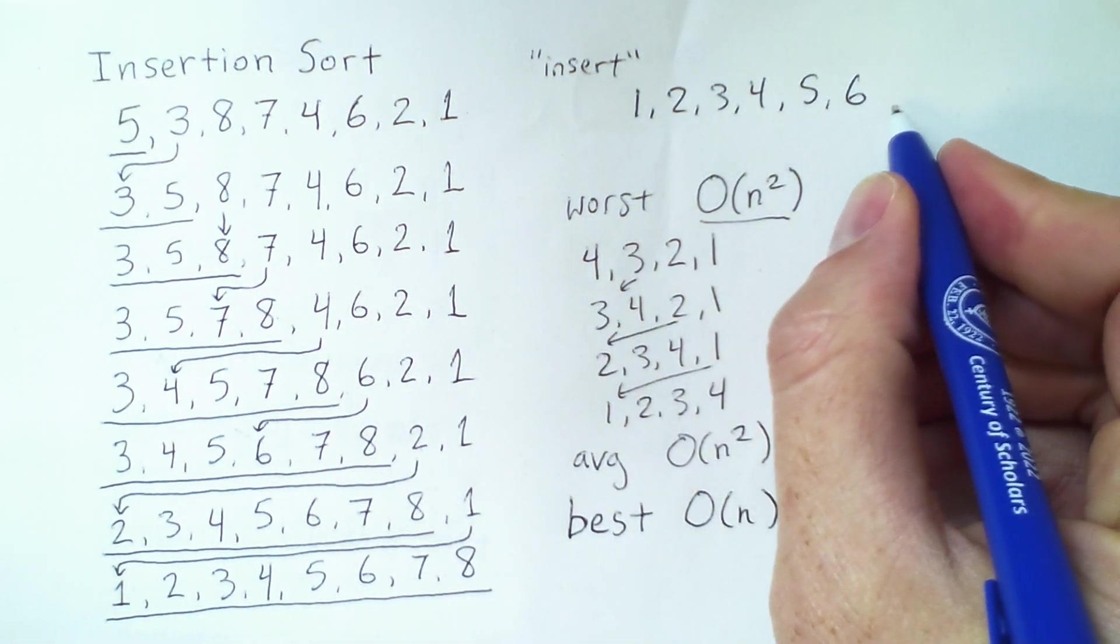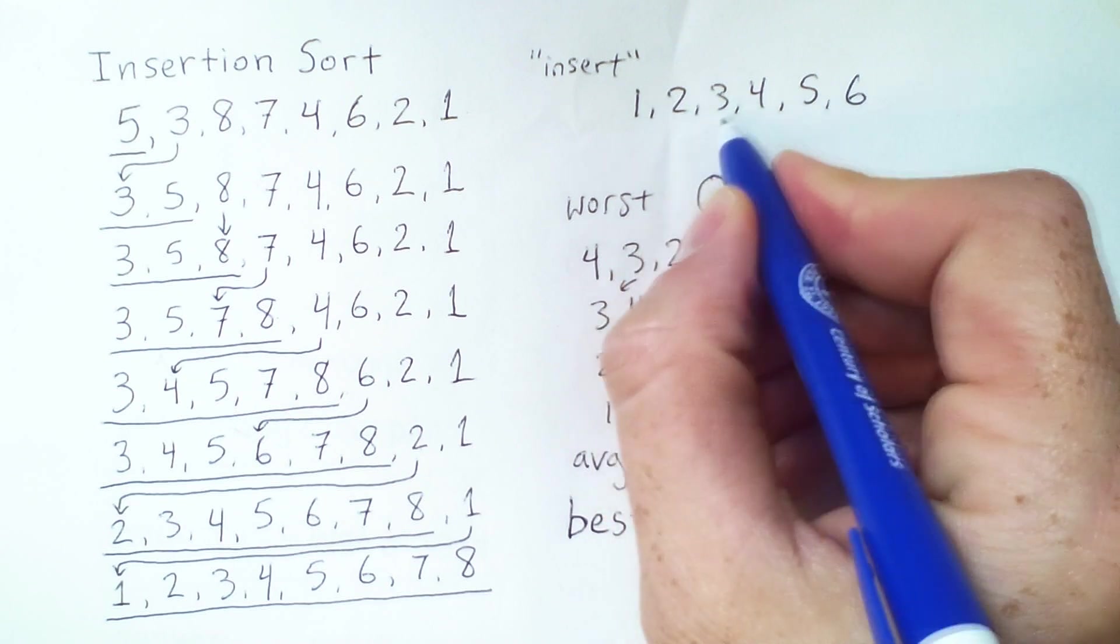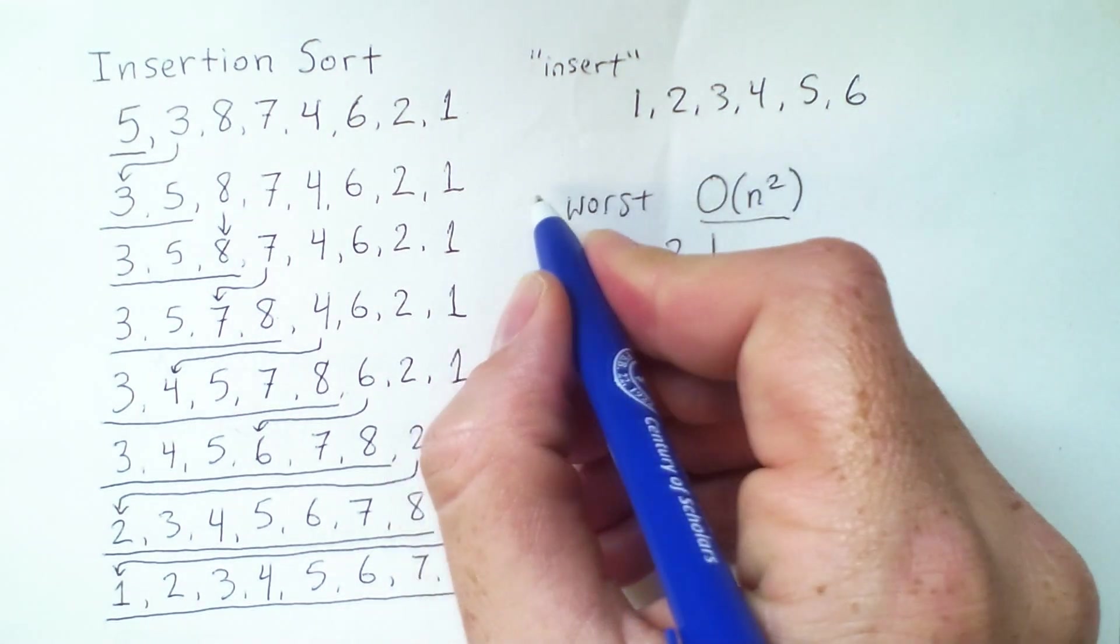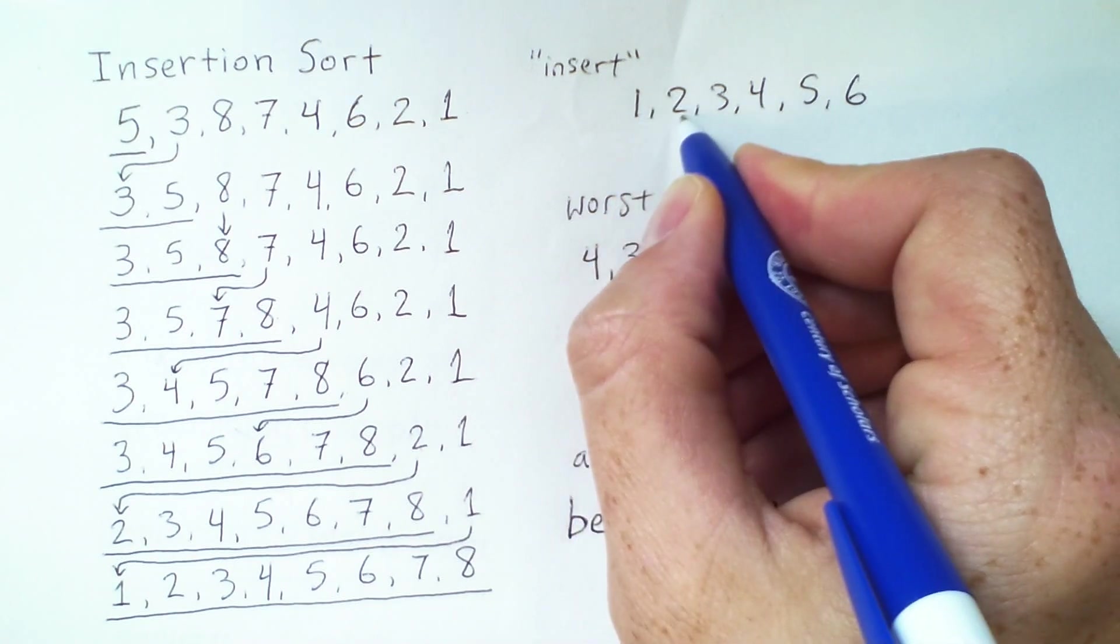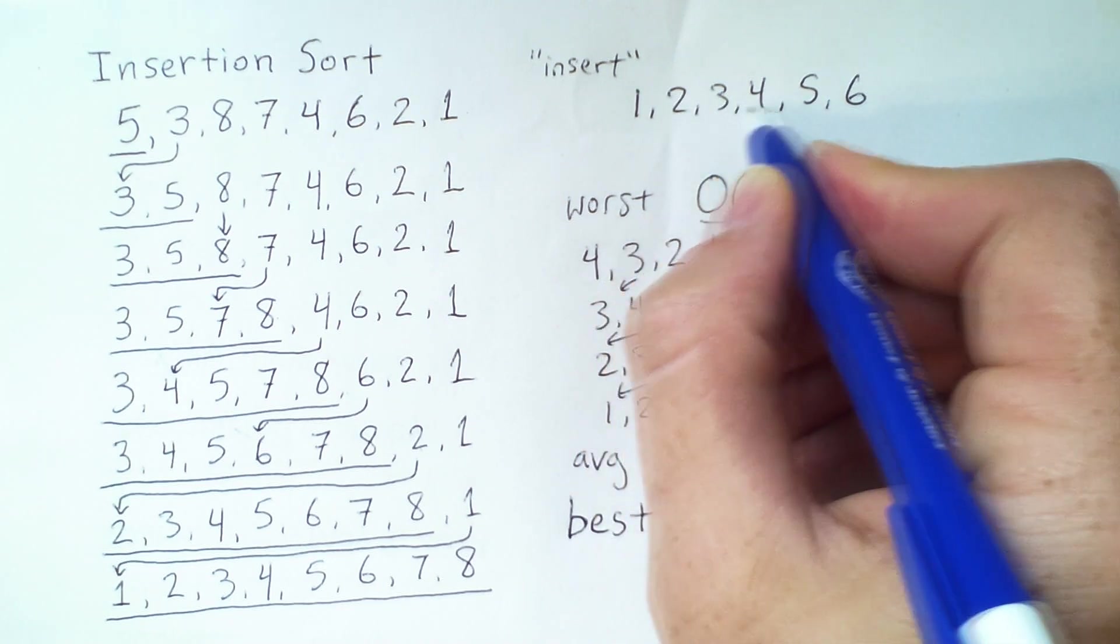And this occurs when the array is already sorted, as we can see here. So let's say this array is already sorted. I'm going to go through one position at a time and then decide how many steps to shift back each element. So I check the 2. I don't need to shift it back. Check the 3. I don't need to shift it back. Check the 4. No shifting.